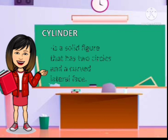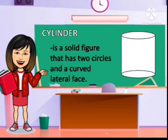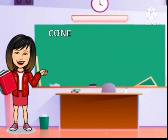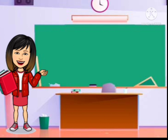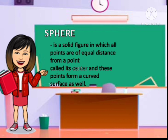A cylinder is a solid figure that has two circles and a curved lateral face. Next, we have cone. A cone is a solid figure that has a circular flat base and a curved face pointed towards the top. The pointed top end of the cone is called the apex. Next, we have a sphere. A sphere is a solid figure in which all points are of equal distance from a point called its center, and these points form a curved surface.